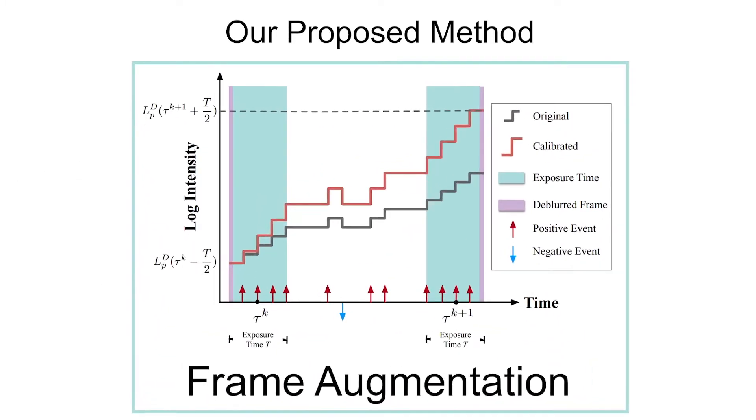In frame augmentation, we de-blur two consecutive image frames using an existing event-based method, called the event double integral model. Next, we calibrate the event signal by vertically stretching it to match the start and end intensity levels. Finally, we interpolate along the temporal dimension, improving the temporal resolution of the image frames.